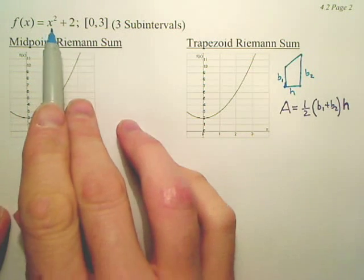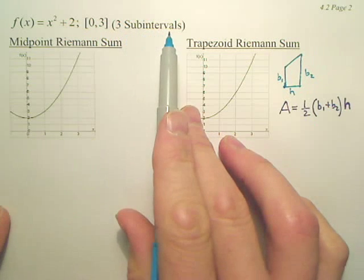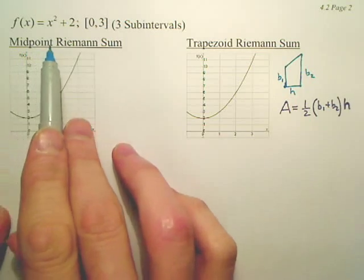I want to find, here's the graph of x squared plus 2 on the interval 0 to 3. I want to make three subintervals, but I'm making my rectangles using midpoints.